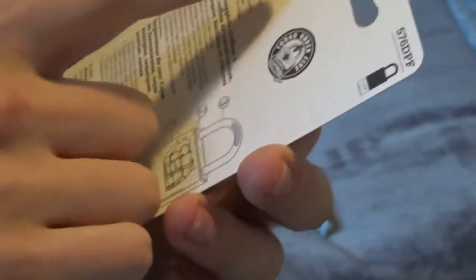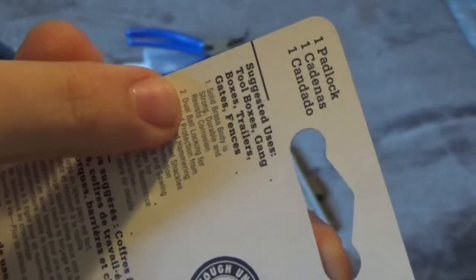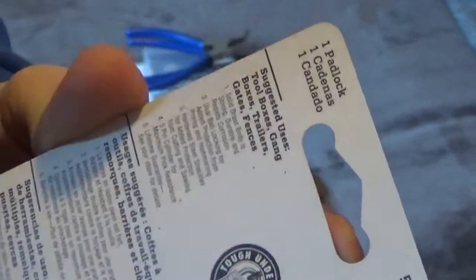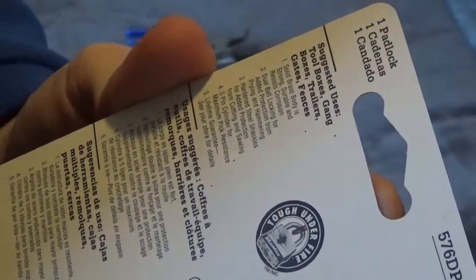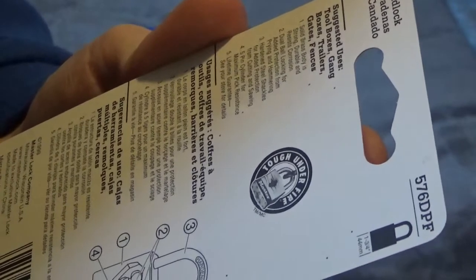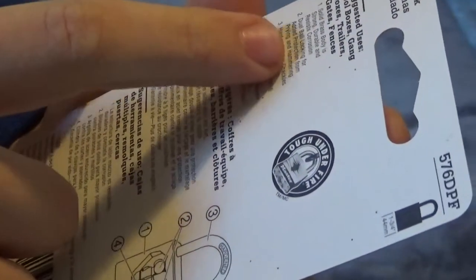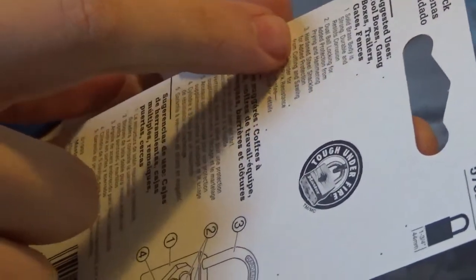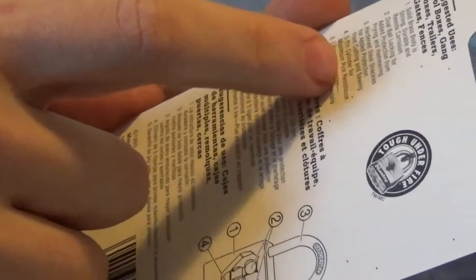At least they say on here their suggested uses are for toolboxes, gang boxes, trailers, gates, fences. Solid brass body, durable and resist corrosion. Dual ball locking for added protection from hammering and prying. Hardened steel shackle for added protection cutting and sawing. I would agree with those.